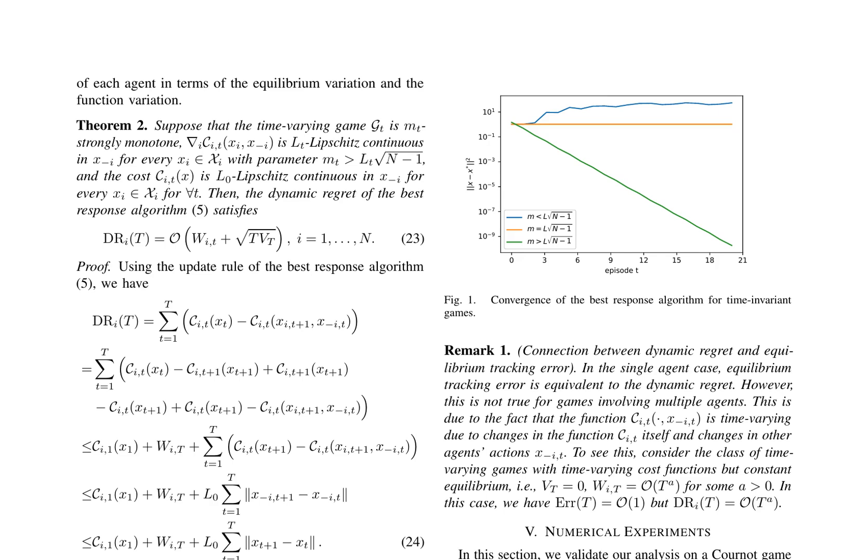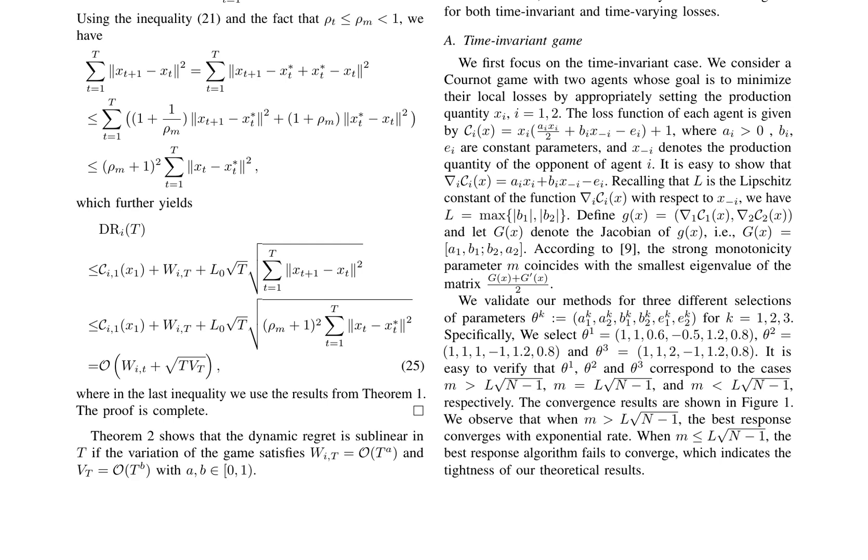The paper further delves into numerical experiments on a Cournot game, encompassing both time-invariant and time-varying loss functions. In the time-invariant Cournot game, two agents strive to minimize their local losses by adjusting production quantities. Each agent's loss function is provided, along with the definition of the strong monotonicity parameter m as the smallest eigenvalue of a particular matrix. To validate the proposed methods, the paper employs three distinct parameter selections, corresponding to different cases of m compared to l√(n-1), where l denotes the Lipschitz constant of the function ∇_i Ci(x) with respect to χ. The convergence results are depicted in Figure 1, demonstrating exponential convergence when m > l√(n-1), and a lack of convergence when m ≤ l√(n-1). These findings underscore the tightness of the theoretical results, providing valuable insights into the efficacy of the best response algorithm in dynamic game settings.